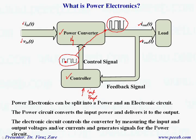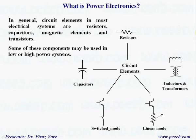In general, circuit elements in most electrical systems are resistors, capacitors, magnetic elements — which can be either inductors or transformers — and transistors operating in switch mode or linear mode. Some of these components may be used in low or high power systems.